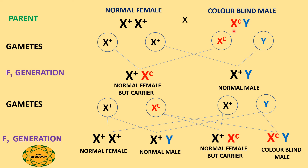The female produces gametes X+ and X+, whereas the male produces gametes Xc and Y. At fertilization, X+ fertilizes with Xc to produce X+Xc — a carrier but normal female, since the dominant gene suppresses the recessive gene. X+ fertilizes with Y to produce X+Y — a normal male. Thus in F1, all females are normal carriers and all males are normal.